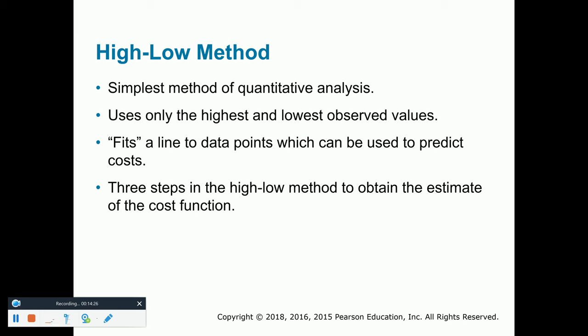There are two basic types of quantitative analysis. The first one is typically called the high-low method. With the high-low method, as the name would suggest, we look at a bunch of data for a given period for a particular cost — say six months of data. We take the high month of data and the low month of data and compare the two: how much was the total cost at the high level versus the low level, and the same for the cost driver. What we're doing is analyzing mixed costs to try to determine how much is fixed and how much is variable.